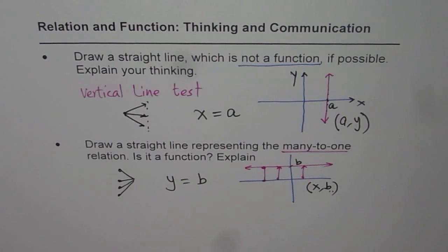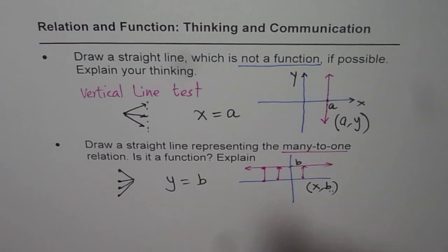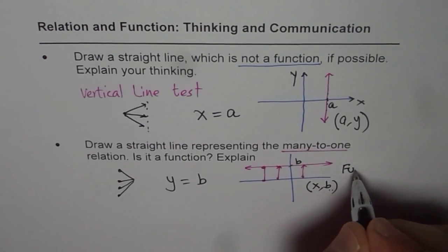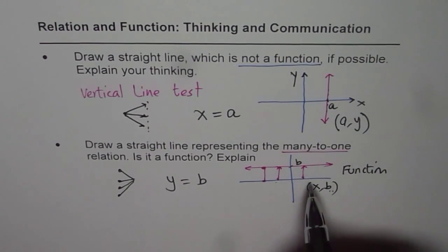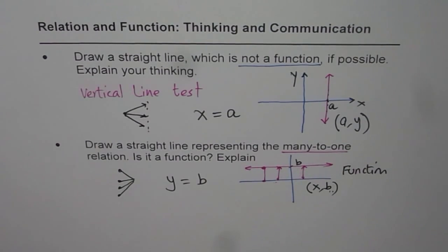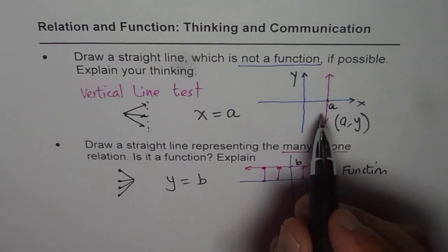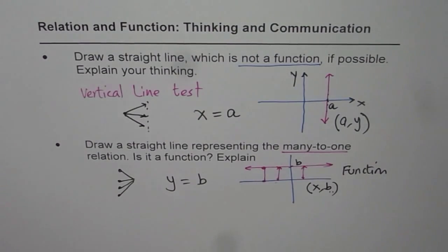So we see this one is a function, right? Since for any x value we have a unique correspondence, just b. So that is a function. But this is not a function, as we wanted. So that is how we should think about it. Thank you and all the best.